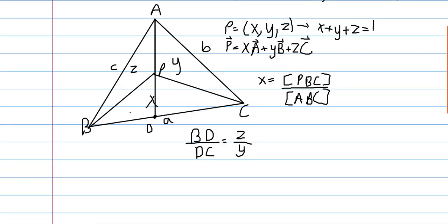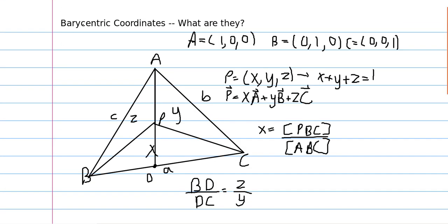So this is the area definition. Barycentric coordinates have three main names: Barycentric, Trilinear, and Areal. Areal refers to this area definition. Barycentric has to do with treating this point as a center of mass and weighing out the vertices likewise.